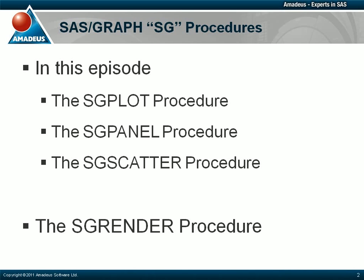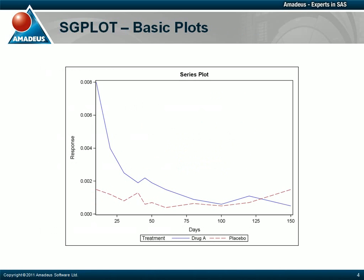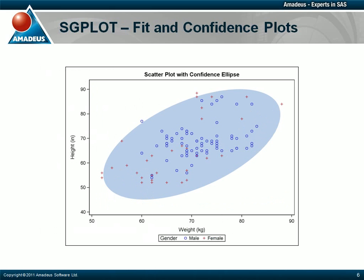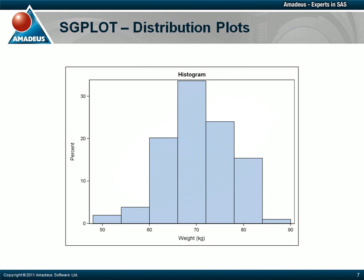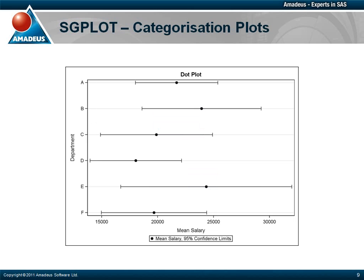The SG plot procedure can be used to create a wide variety of plots — for example scatter plots and series plots, fit and confidence plots such as regression plots and confidence ellipses. In this example I have overlaid a scatter plot with a confidence ellipse. Overlaying plots like this is a very straightforward procedure with SG plot. Proc SG plot can also create distribution plots such as histograms and box plots, and categorization plots such as dot plots and bar charts.